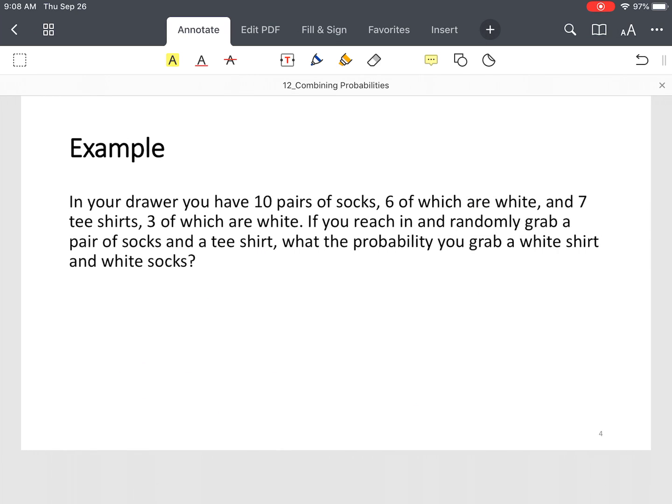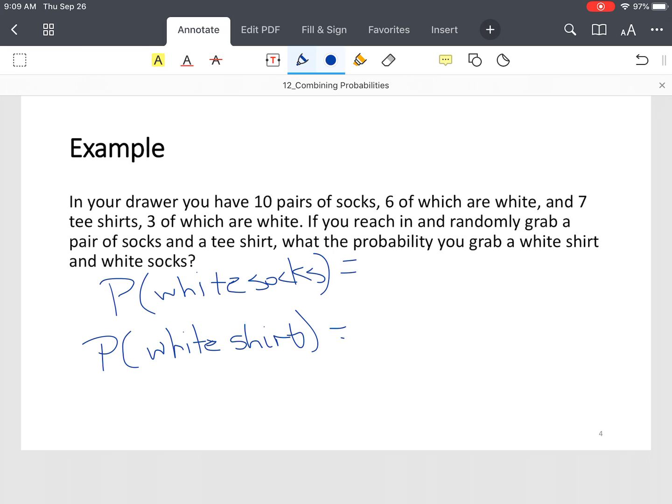So, now, let's work an example. We got, in the drawer, we have ten pairs of socks, six of which are white, and seven t-shirts, three of which are white. If you reach in and randomly grab a pair of socks and a t-shirt, what is the probability you grab a white shirt and white socks? So, we're going to write this as two separate probabilities. So, the probability of white socks and we want the probability of a white shirt. Those are your two events. Okay? Notice, one event doesn't have an effect on the other. So, these are independent events.